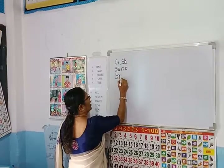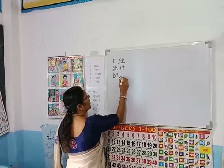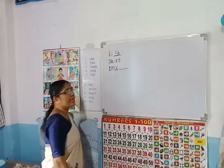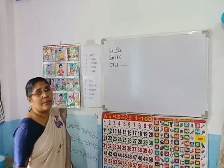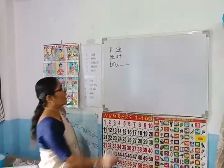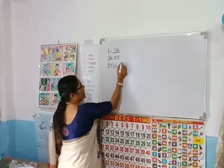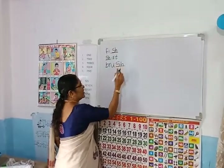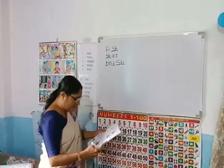B, R, U, dash. Which blend words come here? B, R, U — brush.